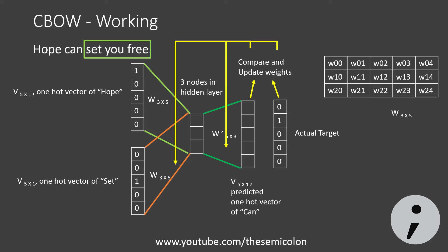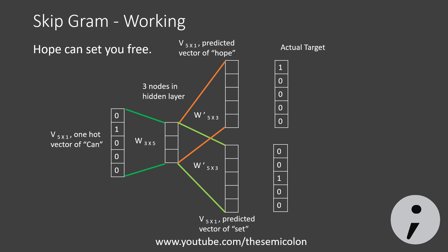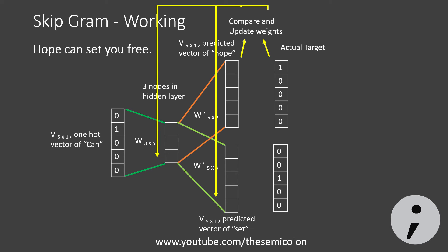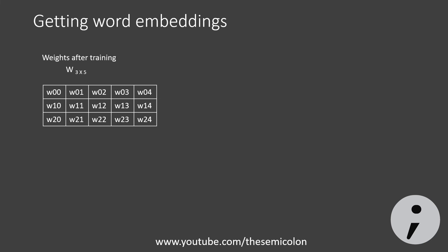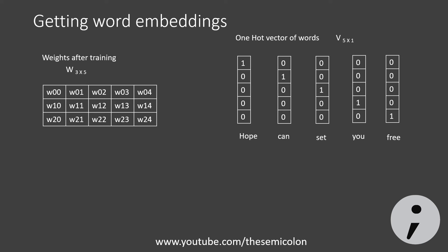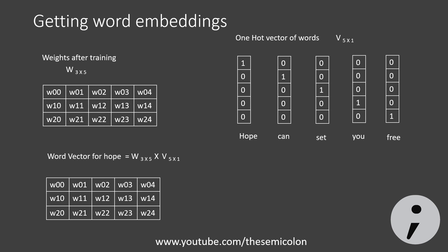Skip-gram is very similar. In Skip-gram we choose the window size and give the center word as input, trying to predict the context words. The weights are updated in a similar way, and here again the output matrix of size 5×3 is shared by the context words. Both algorithms help update the weight matrix based on words and context. We then take the input weight matrix and multiply it by the one-hot vector of a particular word to obtain its word vector — this word vector is what we call a word embedding.